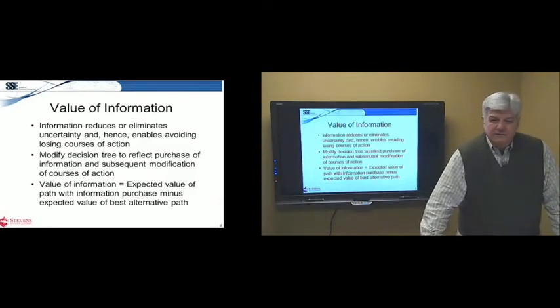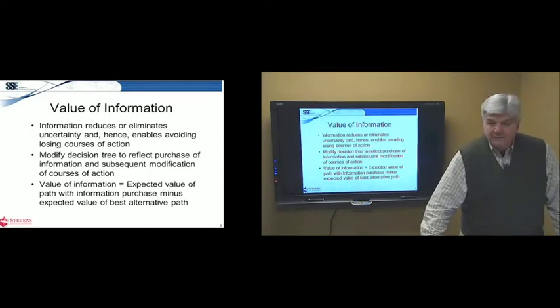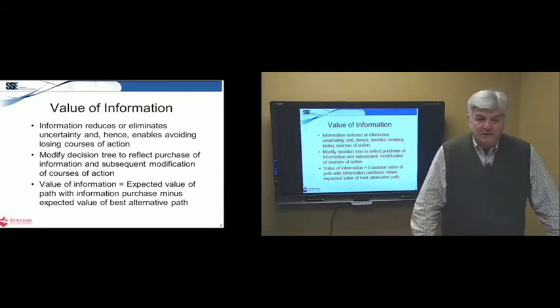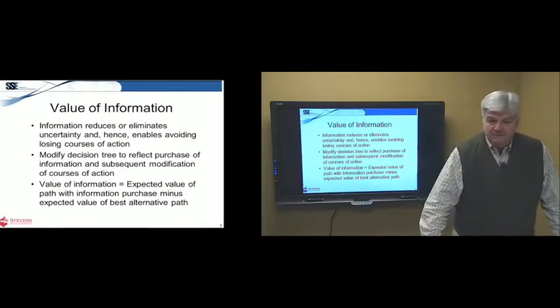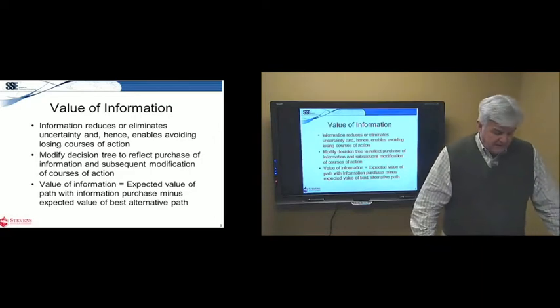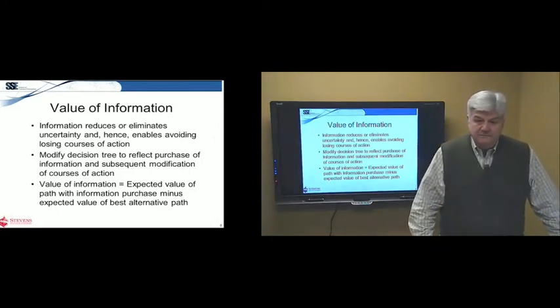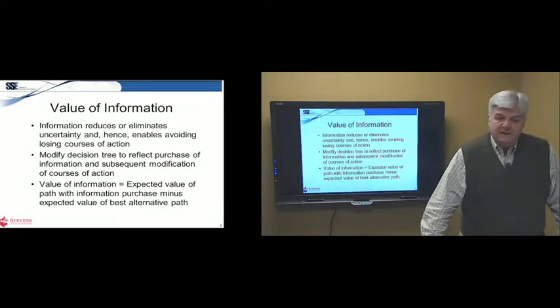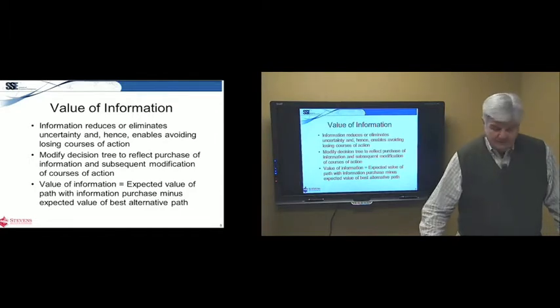Now, one way we could deal with this uncertainty is we could buy some information. We could buy some information that helps us. So, before we buy stocks, we might look at some valuation of companies. Before we buy a house, we might look at comparables for houses in the neighborhood. So we could try to reduce our uncertainty. Information reduces or eliminates uncertainty and helps you to avoid losing courses of action. What we're going to do now is we're going to modify our decision tree to reflect the purchase of the information and subsequent modification of your courses of action. So, the value of information equals the expected value of the path with the information purchase minus the expected value of the best alternative path.